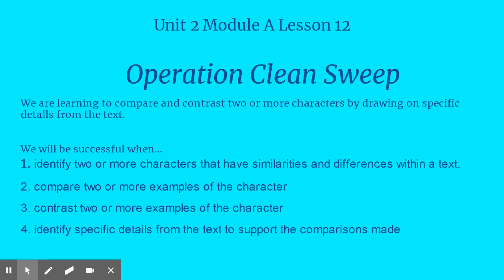Today our focus is going to be comparing and contrasting two or more characters, and we're going to do that by drawing on the specific details from the text — which is just fancy talk for saying we have to back up what we say with text evidence. The steps are: first, identify two or more characters that have similarities and differences. Sometimes our author doesn't give us enough details about every character. When we compare, we find ways they are similar — more than just one example. When we contrast, we find ways they are different — again, more than one example. Then we identify the specific text evidence that supports the comparison and contrast we've made.